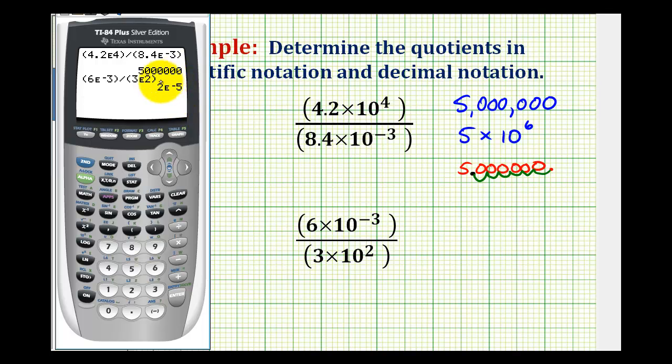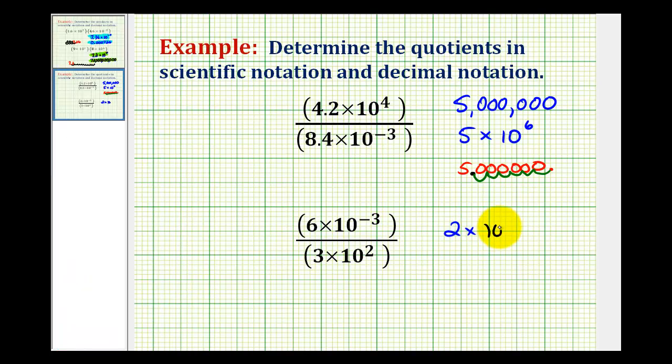We don't want to use this e in our notation. This is going to be 2 times 10 to the negative 5 power. And now we also want to convert this to decimal notation this time. So if we use the number 2 where the decimal point is here, multiplying by 10 to a negative power is going to make this number smaller. So I know I have to move the decimal point left 5 places.